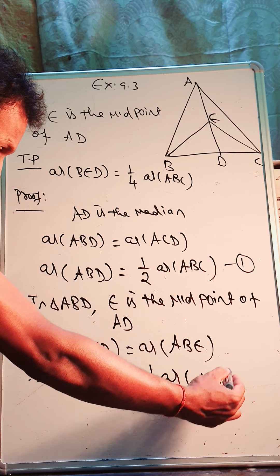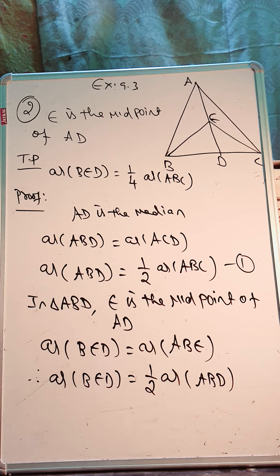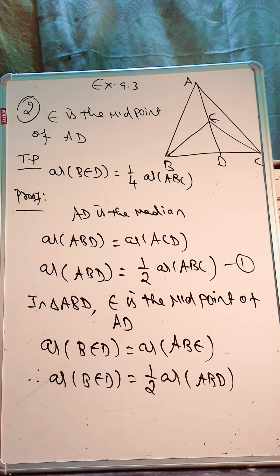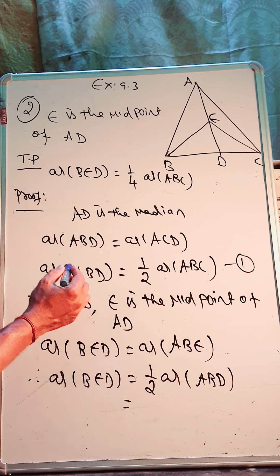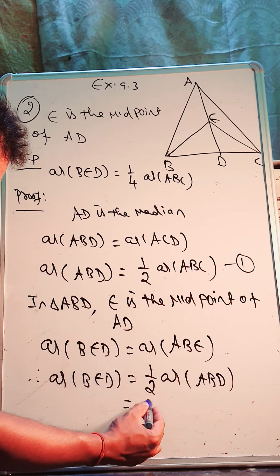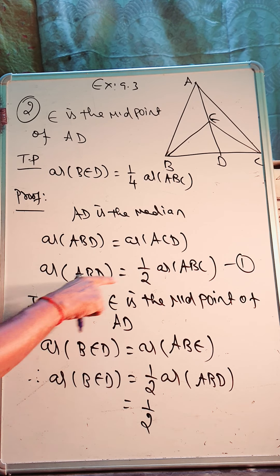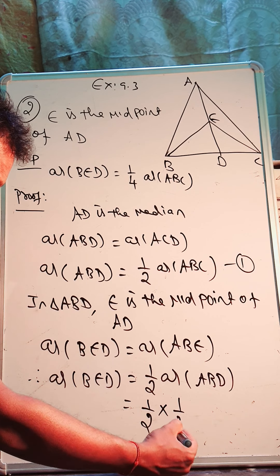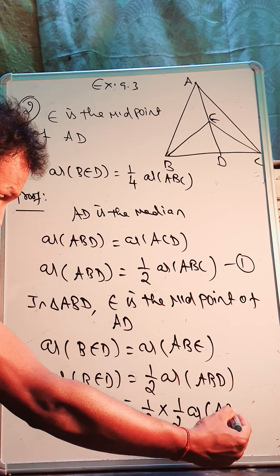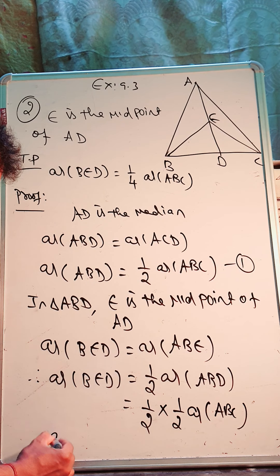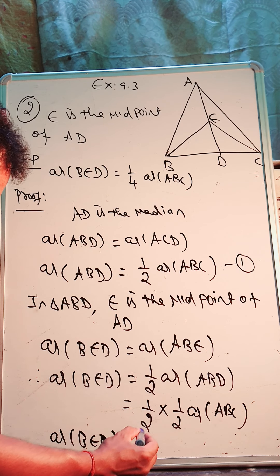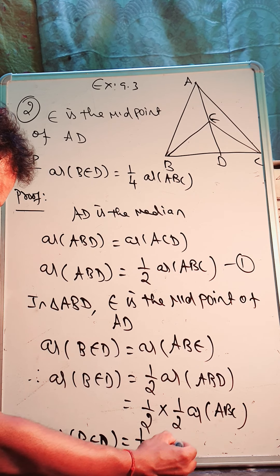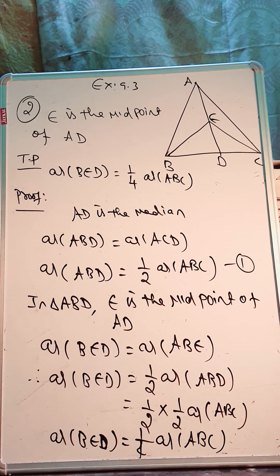Now applying what we found before: area of ABD is half of area of ABC. So area of BED equals half of area of ABD, which equals half of half of area of ABC. Therefore, area of BED equals 1/4 of area of ABC. So that's the proof.